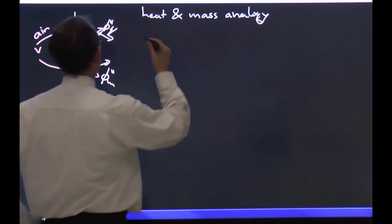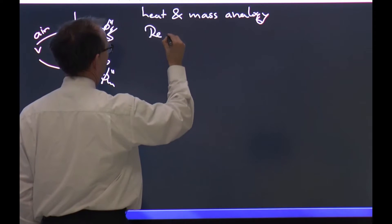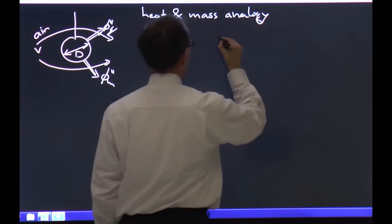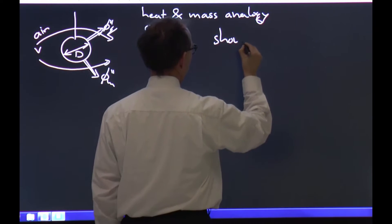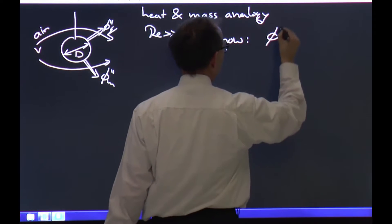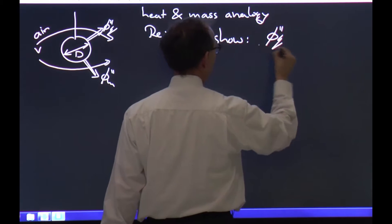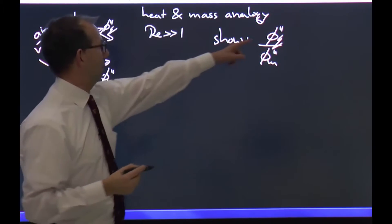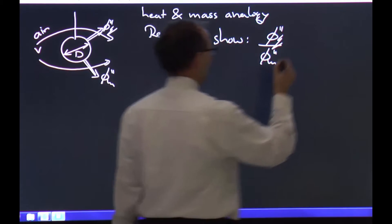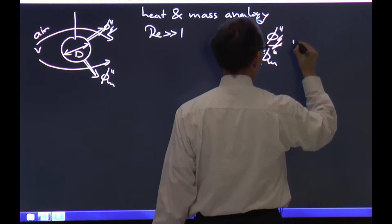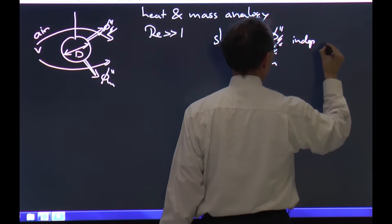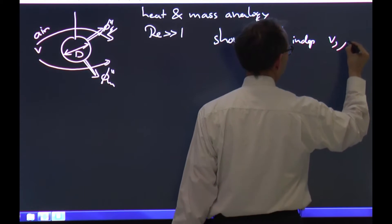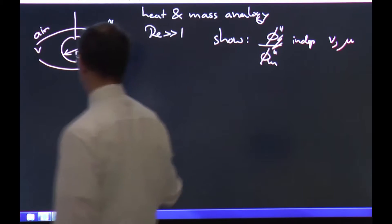What we're going to consider is the case where the Reynolds number is much bigger than 1. I'm going to show that the ratio of the heat flow over the mass flow is independent from the velocity and the viscosity of the air flowing around it.